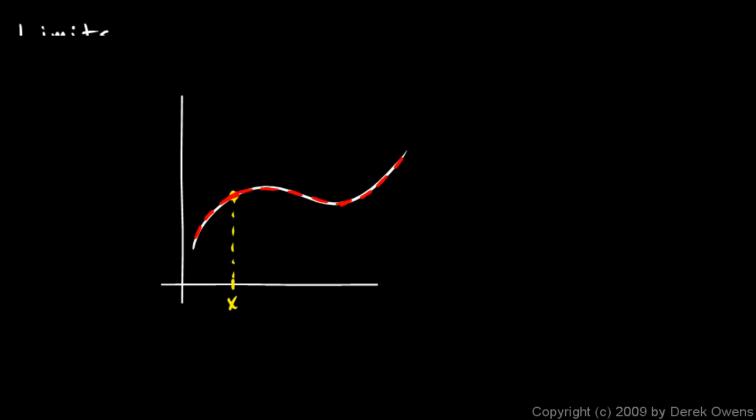Well, right there there's a little infinitely small straight line segment that is a piece of the curve. And the slope of that segment, which is also the slope of the line tangent to the curve, that is the slope of the curve at that x value.